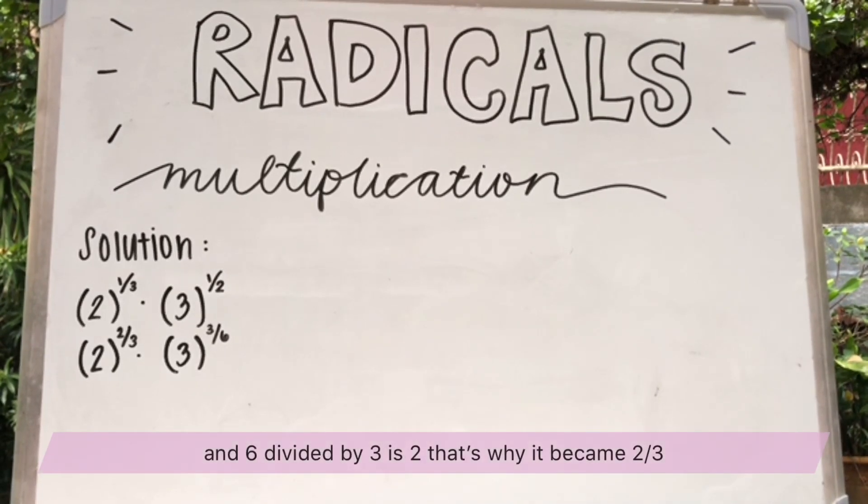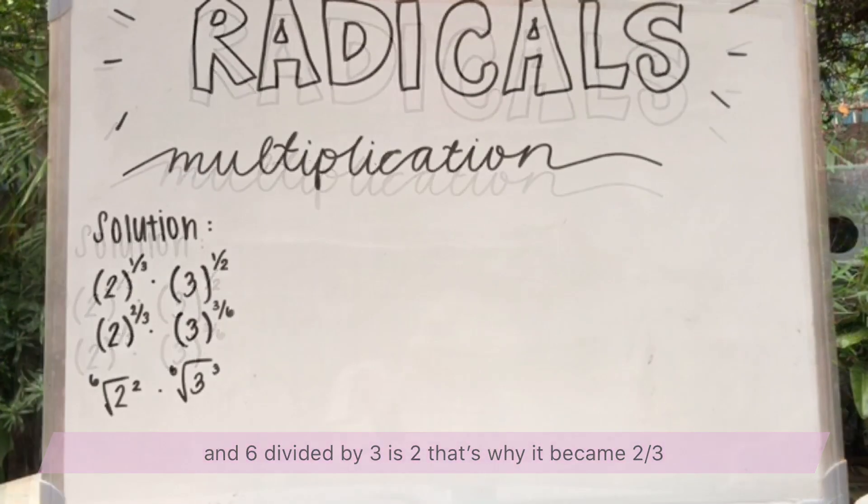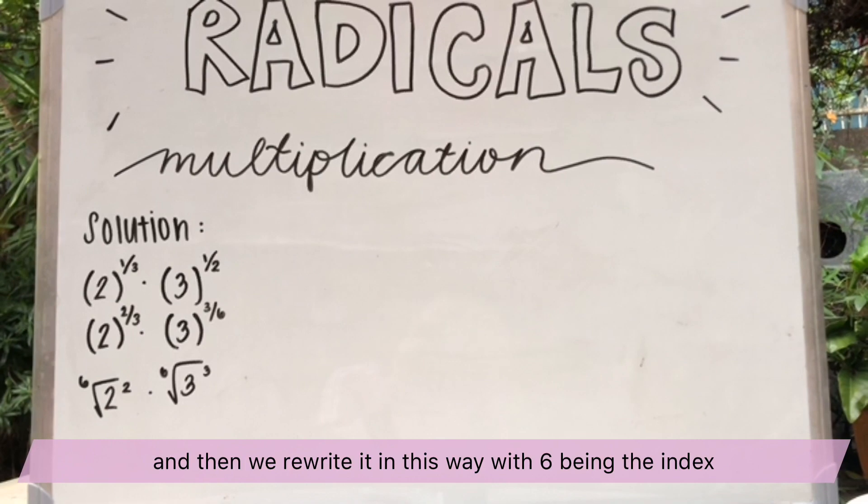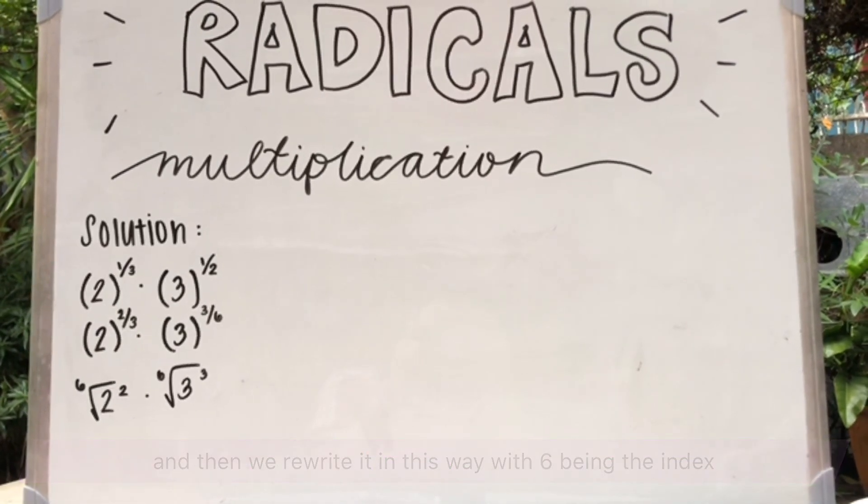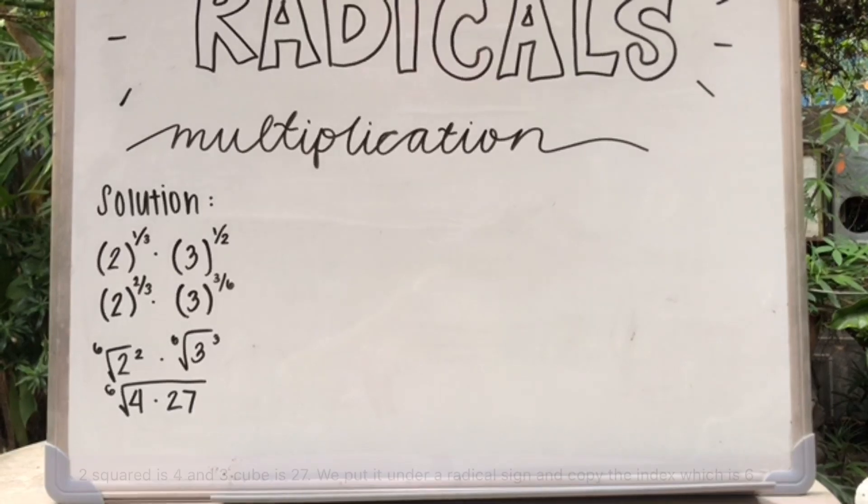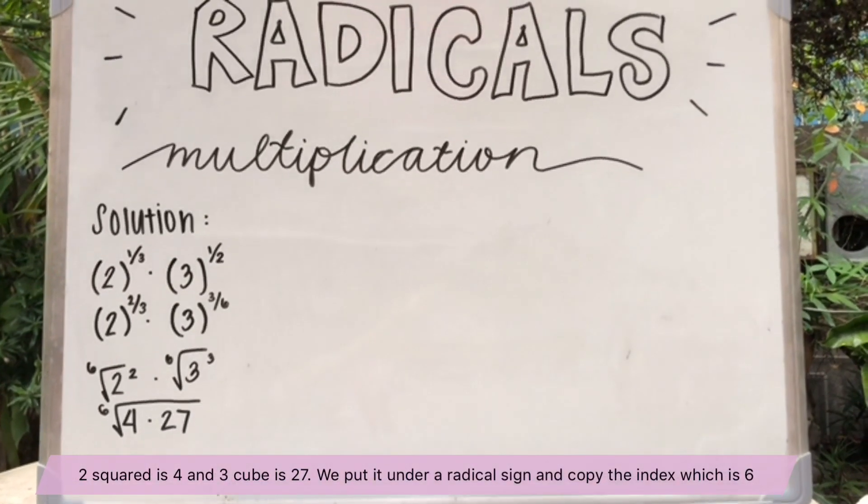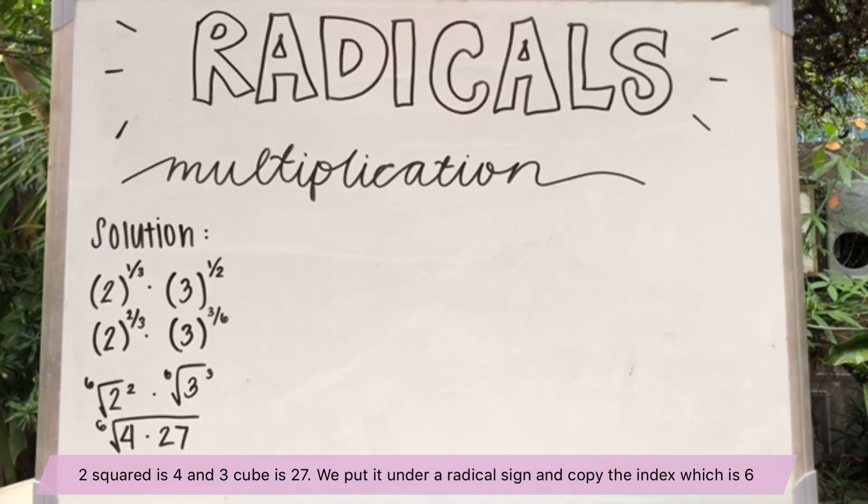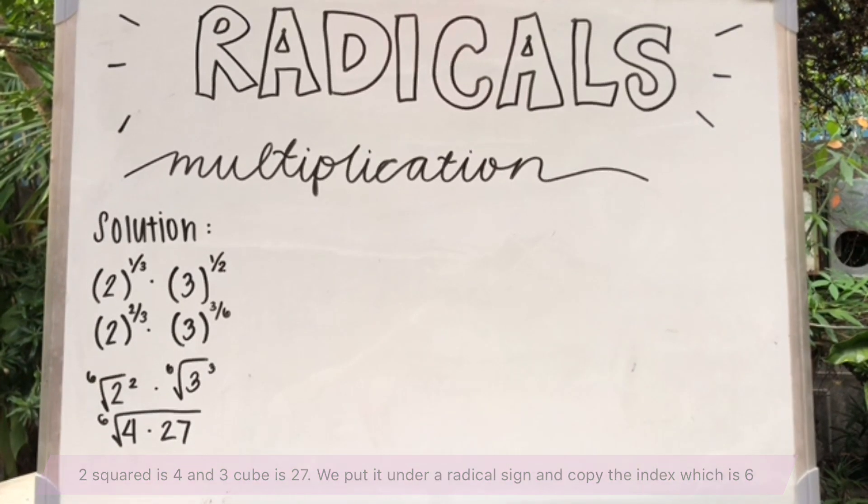And 6 divided by 3 is 2. That's why it became 2 thirds. And then we rewrite it in this way, with 6 being the index. 2 squared is 4. 3 cubed is 27. We put it under a radical sign and copy the index, which is 6.